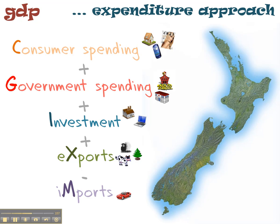So the expenditure approach is: consumer spending plus government spending plus investment plus exports minus imports. If you look in your notes, you'll also see one other thing called the value of physical increase in stock — that's the investment done by firms in production of goods and services that they don't sell in one year, shown as delta R.